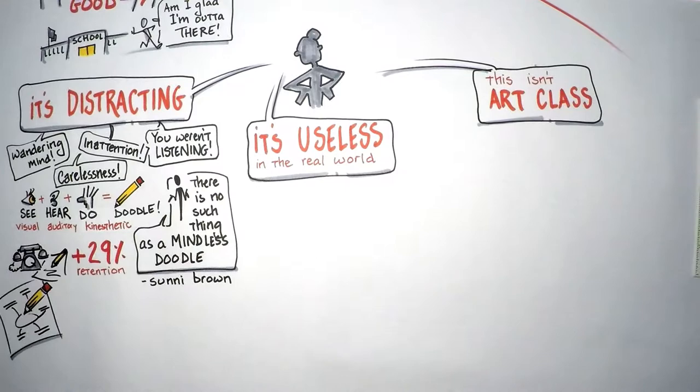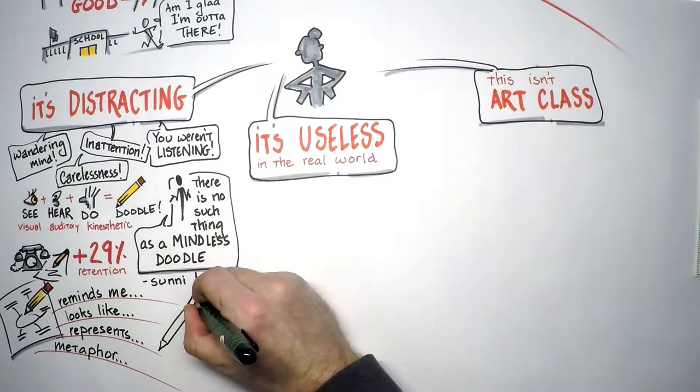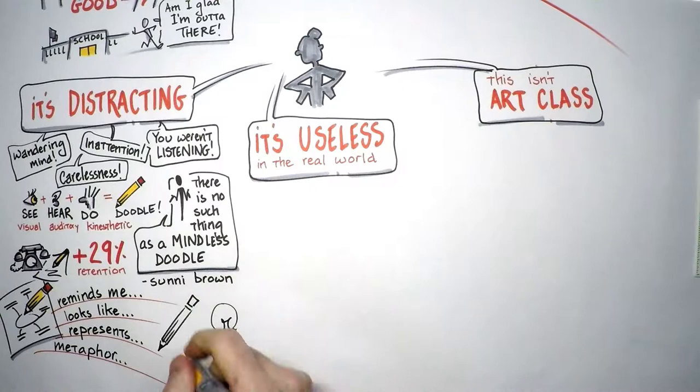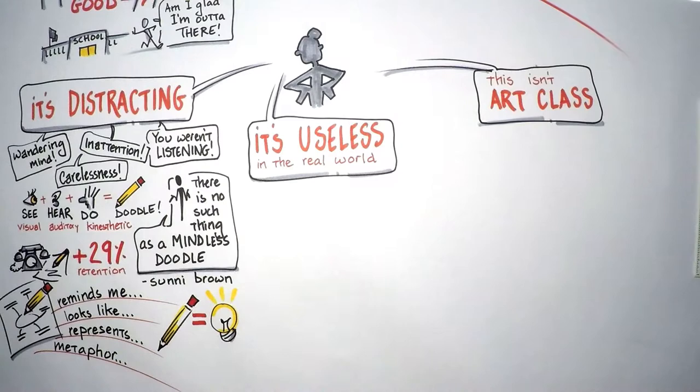But when doodles are relevant to the subject, you make a personal connection with what you are hearing. You think: What does this concept remind me of? What does it look like? What can I draw that represents it? What metaphor could I use to describe it? This active mental process cements comprehension. It creates object permanence around the idea. It establishes an experiential memory that allows the learner to make connections and see patterns that would have been invisible to the passive learner.